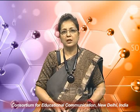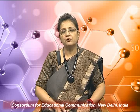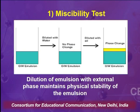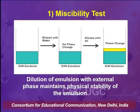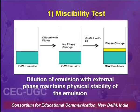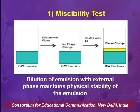On the contrary, if an emulsion is diluted with oil and that oil happens to be the internal or discontinuous phase, then on addition of oil the system will show separation of two phases. As the diagram represents, the oil will float over the system, indicating that the system was oil-in-water and its dilution with oil is creating instability. The miscibility test identifies the type of emulsion based on whether dilution is accommodative when done with the external phase.